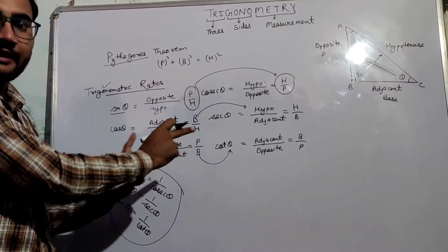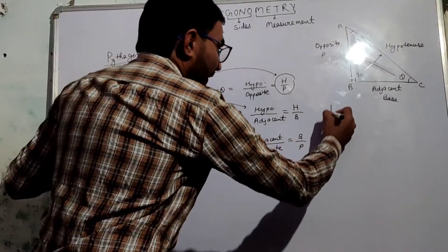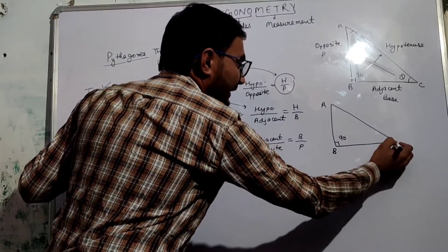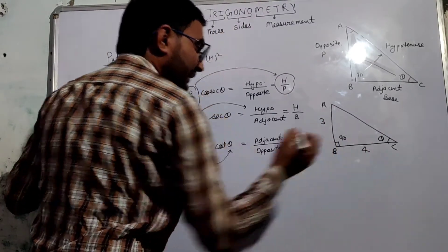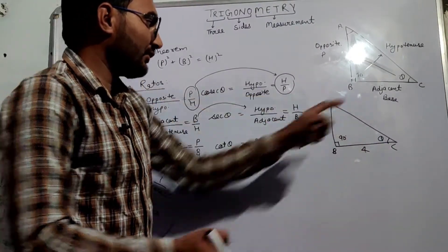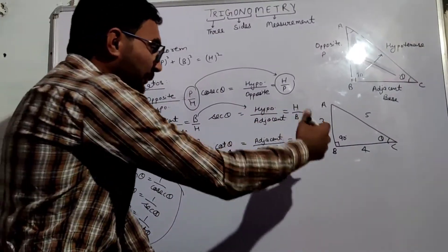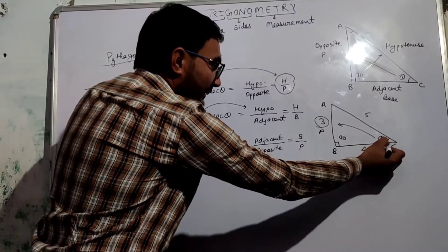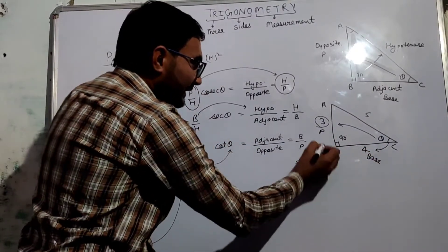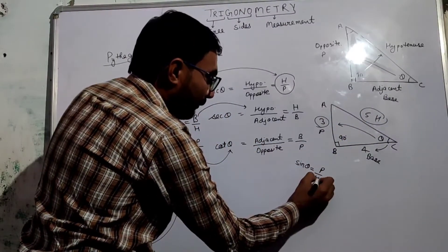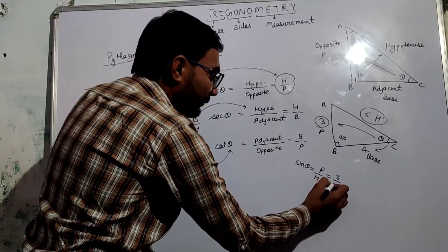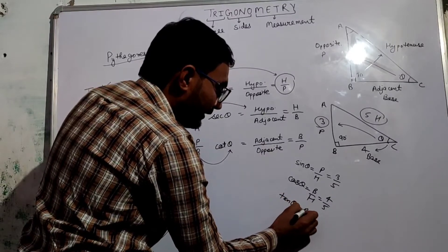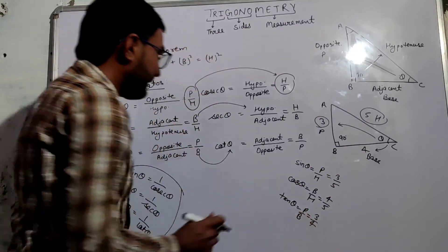Now let us take an example of a right angle triangle in which the right angle is at B and theta is at C. If this side is 3 and this is 4, then using Pythagoras theorem — perpendicular squared plus base squared equals hypotenuse squared — the value of hypotenuse will be 5. So sin theta will be perpendicular upon hypotenuse which is 3 upon 5. Cos theta equals base upon hypotenuse which is 4 upon 5. Tan theta equals perpendicular upon base which is 3 upon 4.